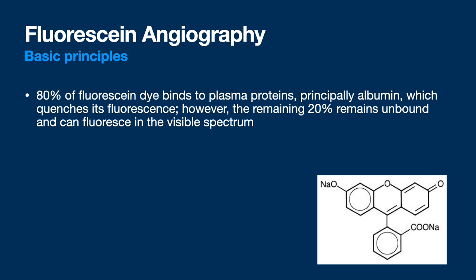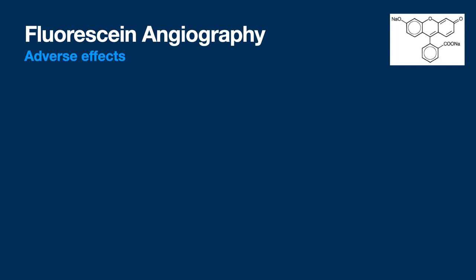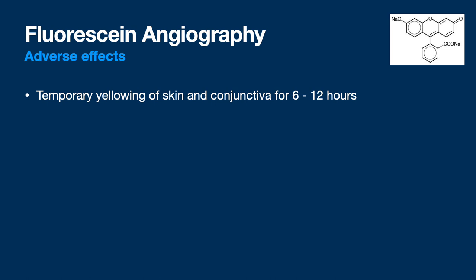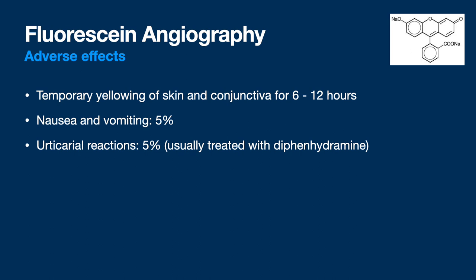A couple of principles: fluorescein dye binds to plasma proteins, which quenches its fluorescence, but about 20% remains unbound and fluorescent. It's metabolized by the liver and kidneys, eliminating in the urine for 24 to 36 hours — always tell patients beforehand so they expect yellow-orange urine and don't call you later. Young patients tend to get nauseated; older patients don't. You do get hives around 5% of the time.